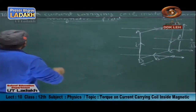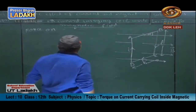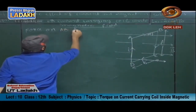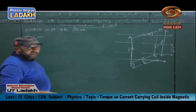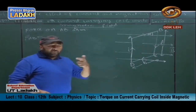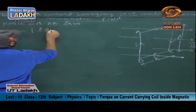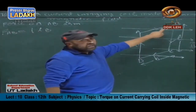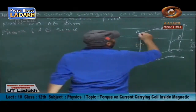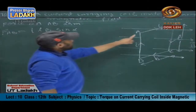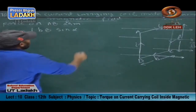We will calculate the force on the AB arm. The current is I and the length is L, so the force on AB is F_AB = IBL sin α. This gives us the magnitude and direction of the force on arm AB.